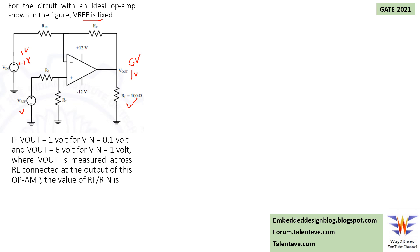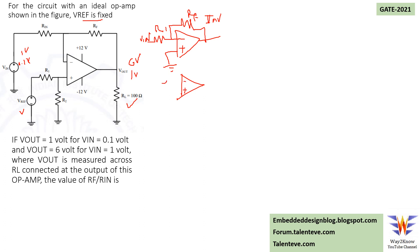Looking at this operational amplifier, both inverting and non-inverting configurations are involved. If we draw the op-amp: the output connects through RF back to the inverting input, with R1 between Vin and the inverting input — that is the inverting configuration. The other configuration has a feedback resistor RF, R1, and Vin at the non-inverting input — that is the non-inverting configuration.